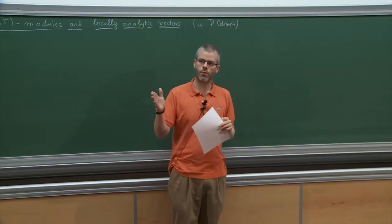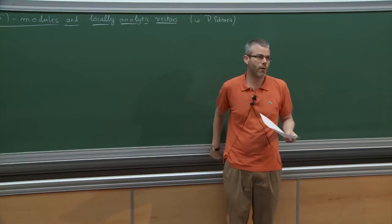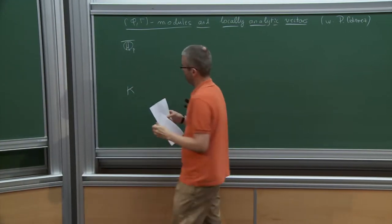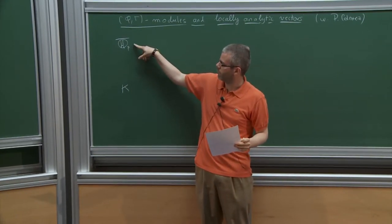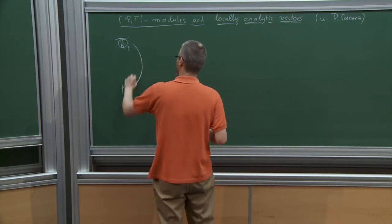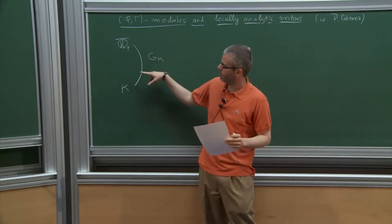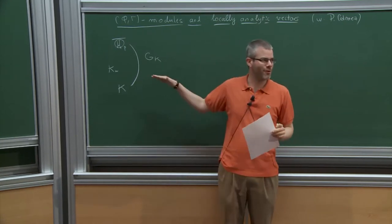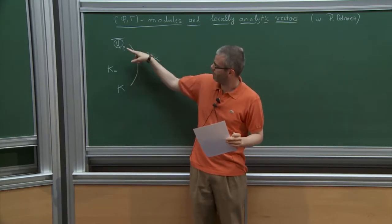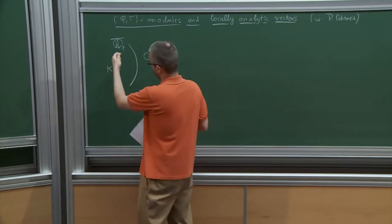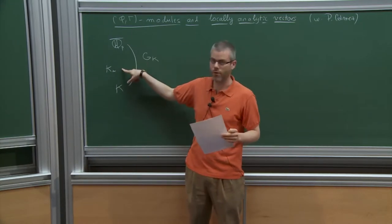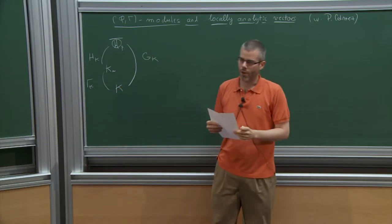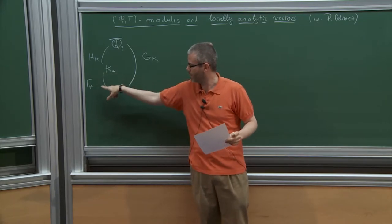There will be some overlap with what Peter Schneider talked about. Let me first remind you what I mean by the Lubin-Tate setting. The basic idea of p-adic Hodge theory is that we start from a finite extension K of Q_p, and we are interested in representations of the Galois group of Q_p-bar over K, so G_K. We define an intermediate extension K_∞ between K and Q_p-bar, and we try to choose K_∞ so that most of the ramification of Q_p-bar over K is contained in K_∞ over K.